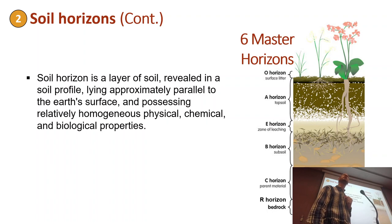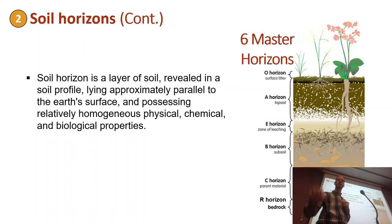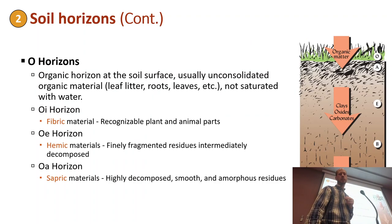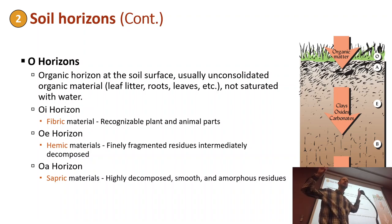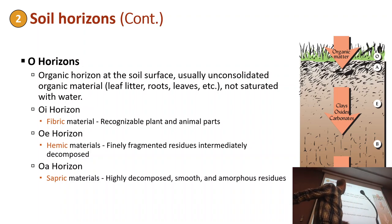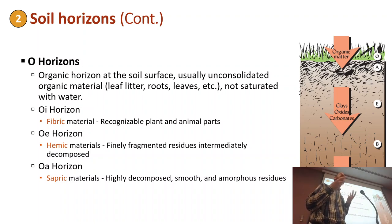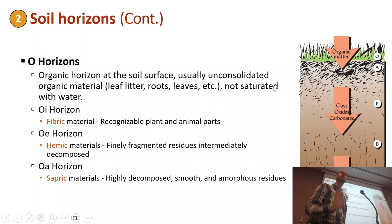The first horizon on top is the O horizon, which has the most organic matter. You especially find O horizons in forest environments, where there are a lot of leaves falling on the surface. The O horizon has different subtypes: OI, meaning the most recognizable plant material — the fibric material where you can still identify what it was. OE has fragments that are hard to identify but are still present, finely fragmented and not very homogenous.